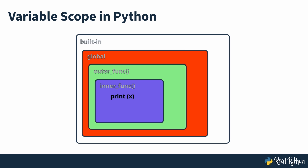Let's say you're inside an inner function. In that case, Python can look for names in all four scopes. When you access a variable in that inner function, Python first looks inside the function. If the variable doesn't exist there, then Python continues with the enclosing scope of the outer function. If it's not defined there either, then Python moves to the global and then built-in scopes in that order. If Python finds the variable, then you get the value back. Otherwise, you get a name error.